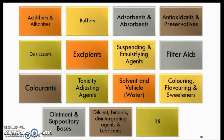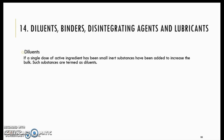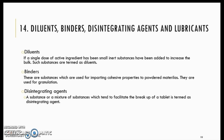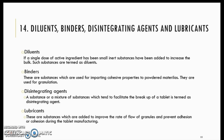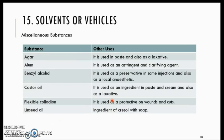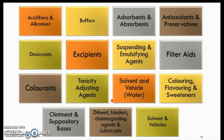Next are diluents, binders, disintegrating agents, and lubricants. Diluents increase the bulk of the pharmaceutical product. Binders cause cohesive properties in the product. Disintegrating agents facilitate the breakup of the product in the body. Lubricants improve the rate of flow of granules and prevent adhesion and cohesion during tablet manufacturing. The last one is solvents and vehicles, which includes various substances and their uses. Those are the 15 pharmaceutical aids and necessities.